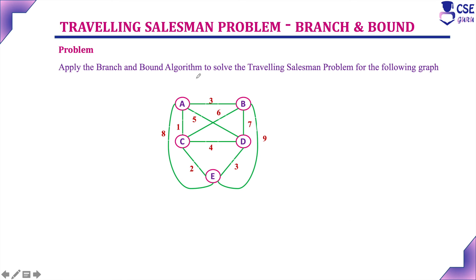We will now implement the Traveling Salesman Problem using branch and bound step by step. The problem: apply branch and bound to solve TSP for the given graph. We always concentrate on choosing the minimum cost edge, considering it as the lower bound value. Since this is a minimization problem, we use lower bound values throughout. The first step is to compute the general lower bound value for the given graph.